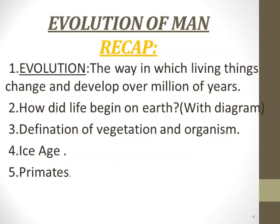Children, you all must remember, I explained you about a term called evolution. What is evolution? The way in which living things change, how they change and how they develop over millions of years is known as evolution. How did life begin on earth? I have shown you that with a diagram, and also explained you about the age of the earth, which was about 4,500 million years.